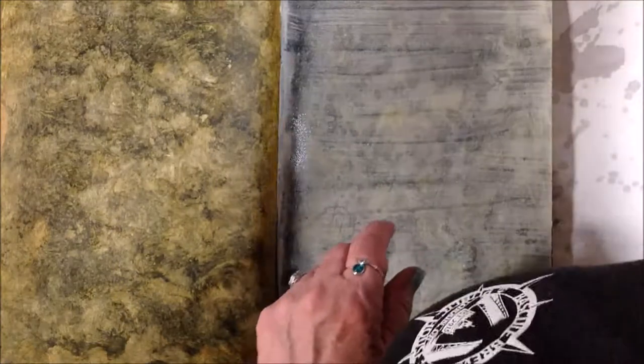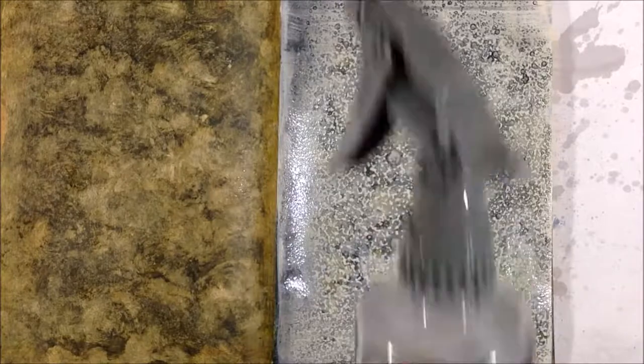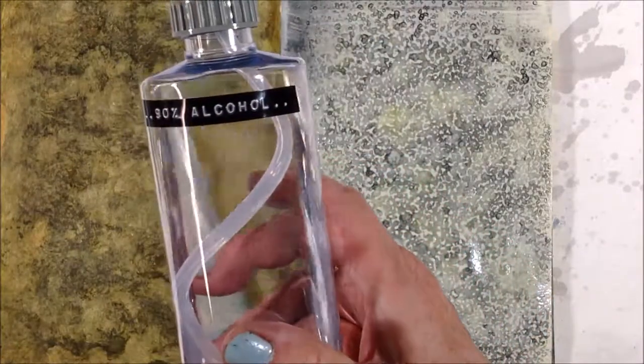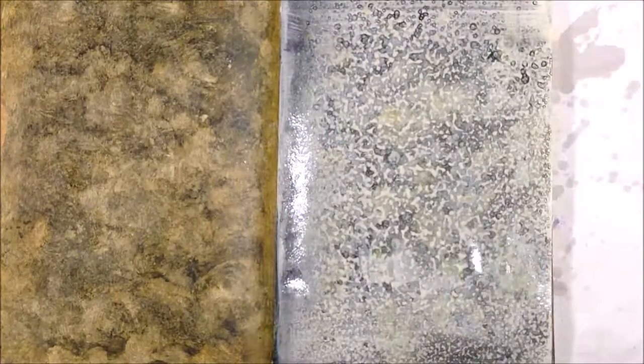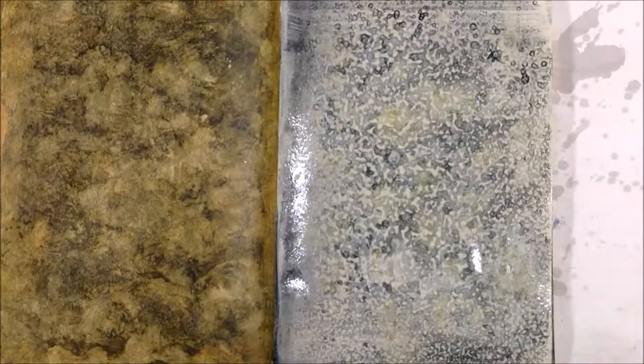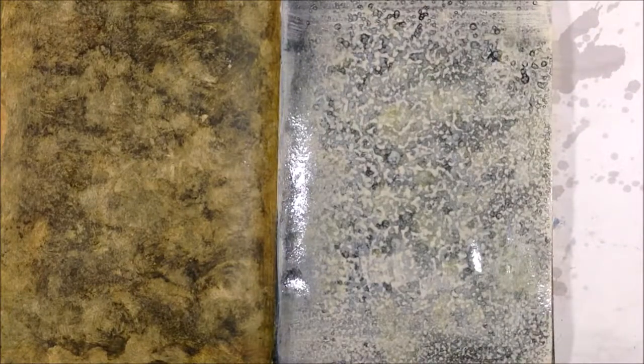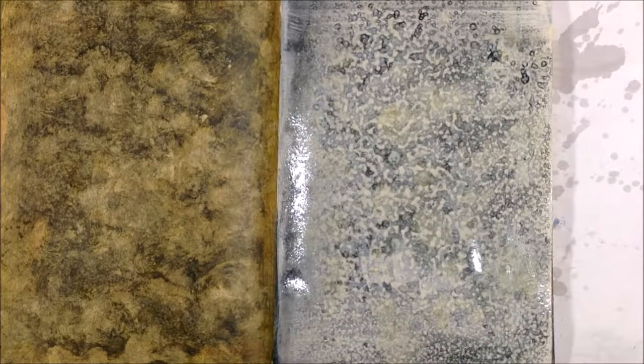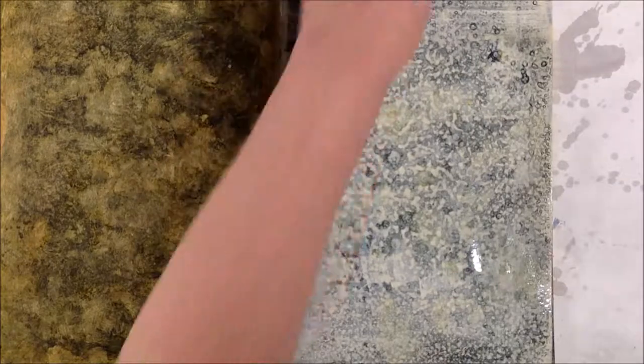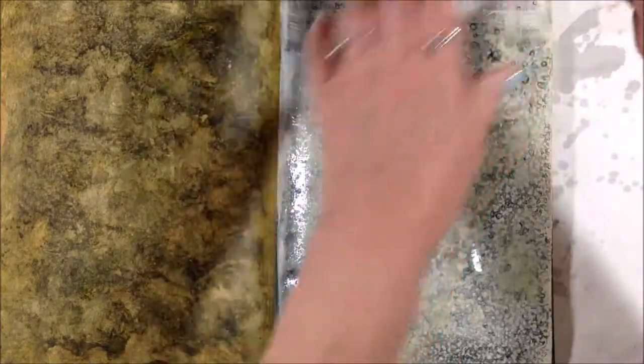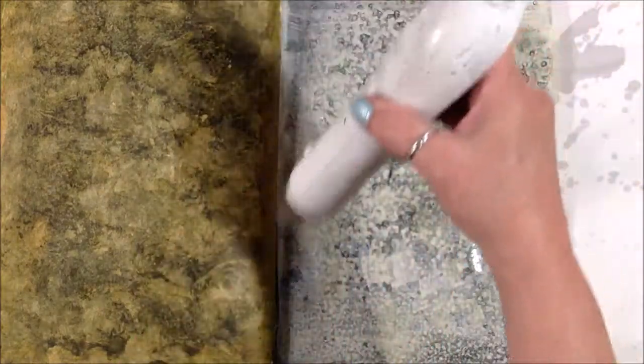And now I'm going to take some 90% or 91% isopropyl alcohol in a spray bottle and just give it a light overall spray. And it creates these cool little craters in the paint. And then I'm just going to dry that off and keep that layer the way it is.